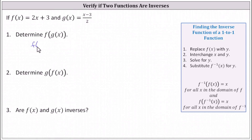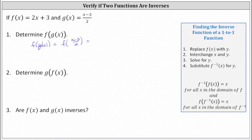To determine f of g of x, we begin with the inner function g of x. Since there's no numerical value as an input for g of x, we replace g of x with the function rule of the quantity x minus 3 divided by 2, which indicates f of g of x equals f of the quantity x minus 3 divided by 2. That quantity now becomes the input into the function f of x, so we substitute it for x in f of x.